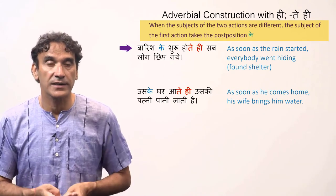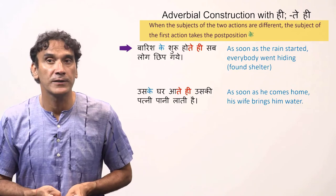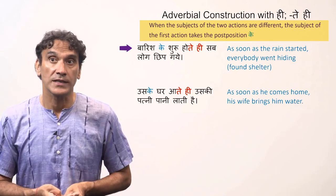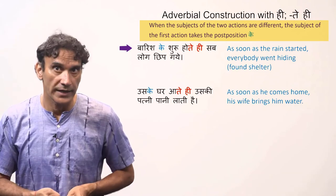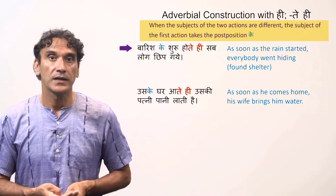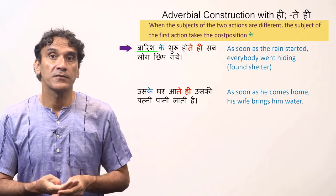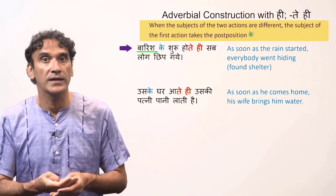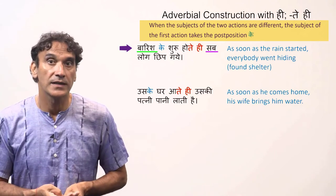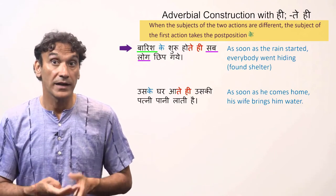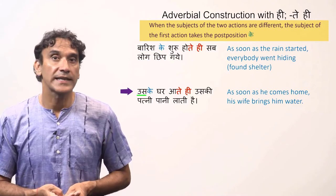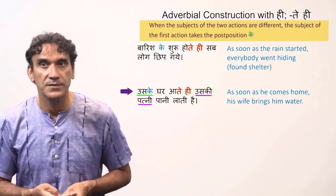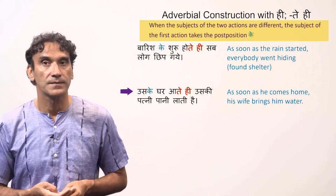Another example: 'Baarish ke shuru hotehi sab log chhip gaye' — as soon as the rain started, everybody went hiding and found shelter. The two verbs are 'shuru hona' (to start) and 'chhipna' (to hide). The subject of 'shuru hona' is 'baarish' (rain) and the subject of 'chhipna' is 'sab log' (everybody). One more example: 'Uske ghar aatehi uski patni paani lati hai' — as soon as he comes home, his wife brings him water.